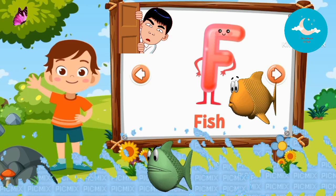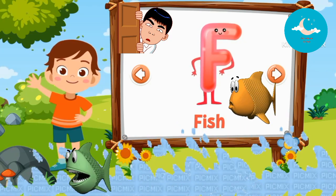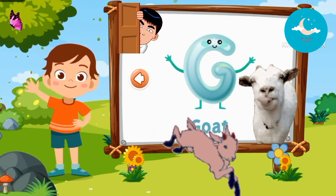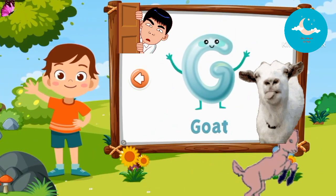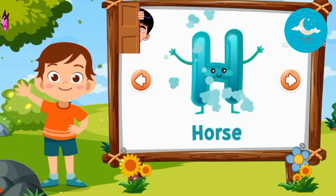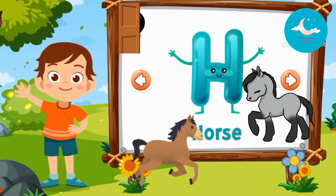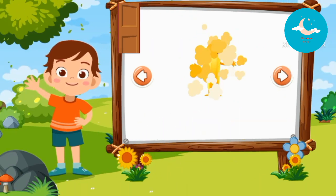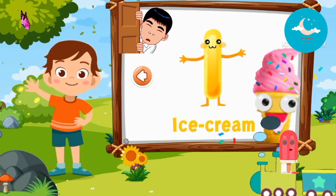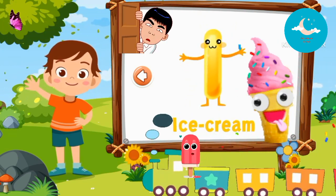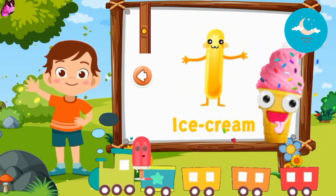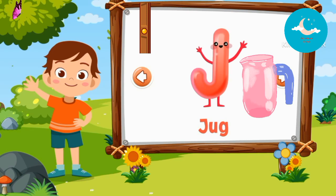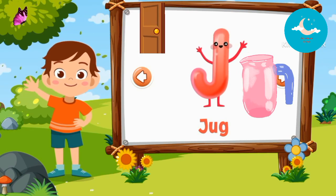F. F is for Fish. G. G is for God. H. H is for Horse. I. I is for Ice Cream. J. J is for Jug.